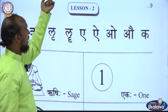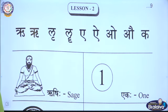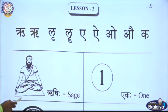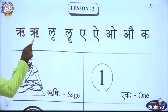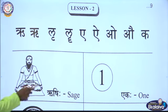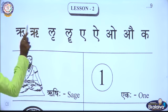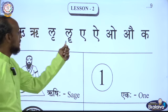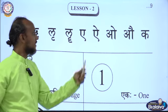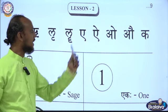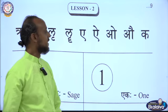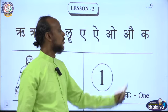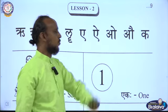Lesson two. Lesson two. Ṛ, Ḷ, Ai, O, Au.